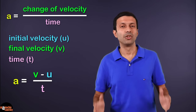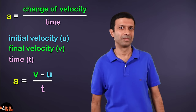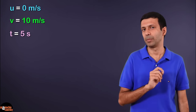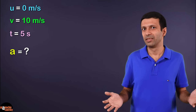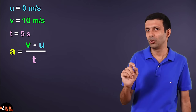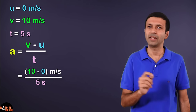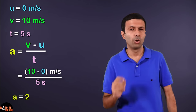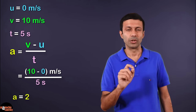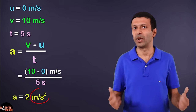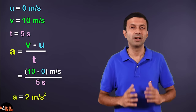Let's use this formula to calculate acceleration in our car example. The car is initially at rest, so initial velocity u = 0 m/s. I press the accelerator and it takes 5 seconds to reach a final velocity of 10 m/s. Using a = (v − u) / t: that's (10 − 0) / 5 = 2. The unit is meter per second per second, so the acceleration of the car is 2 meters per second squared.